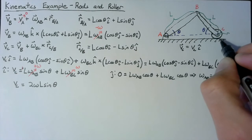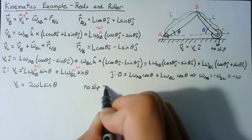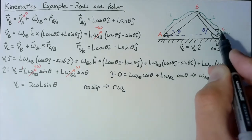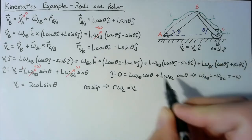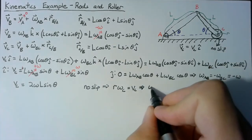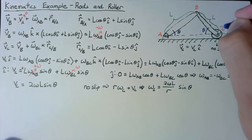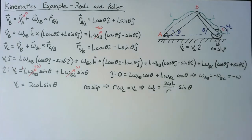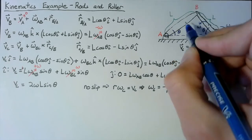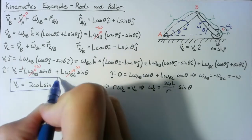We can go further and find the angular velocity of the roller. Using the no-slip condition, R times omega_C equals VC, where omega_C is the angular velocity of the cylinder. This yields omega_C equals 2 omega L over R times sine(theta). Here omega is positive counterclockwise for BC, positive clockwise for AB, and omega_C is defined positive clockwise.